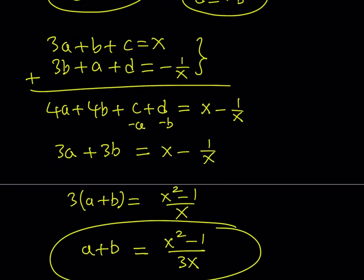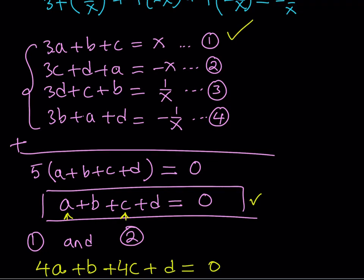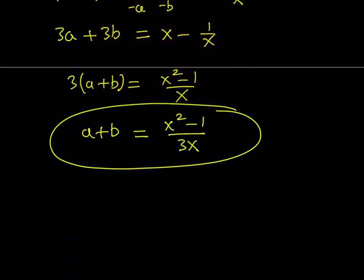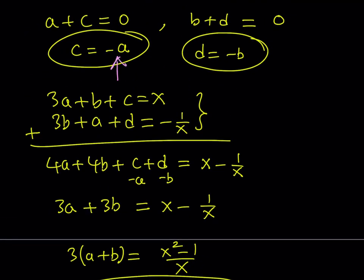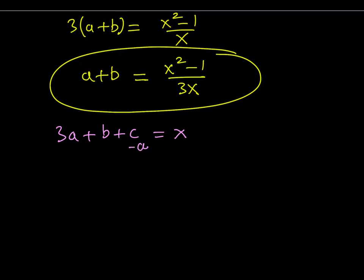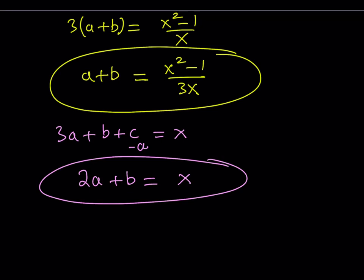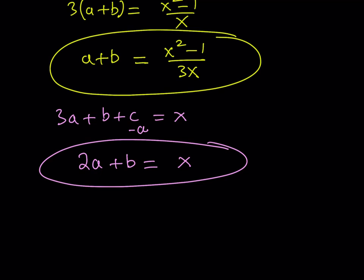Going back to equation 1: 3a + b + c = x. Replacing c with negative a gives 2a + b = x. I can write this as a + (a + b) = x, and since a + b = (x squared minus 1) over 3x, solving for a gives: a = x minus (x squared minus 1) over 3x.